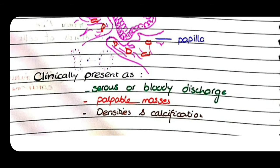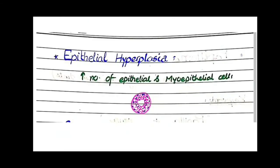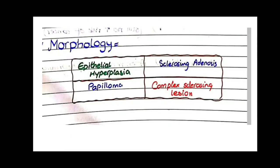Papillomas clinically present as serous or bloody discharge from the nipple. They may appear as palpable masses, and radiographically they appear as densities and calcifications. Remember the four morphological examples of proliferative disease without atypia: epithelial hyperplasia, sclerosing adenosis, papilloma, and complex sclerosing lesion.